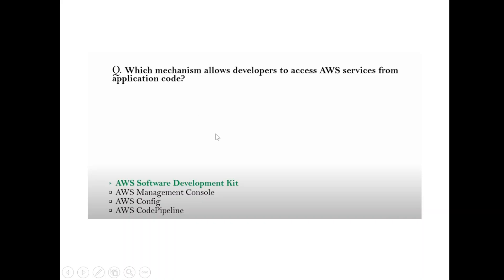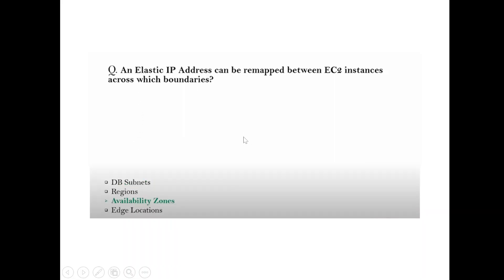Question: Which mechanism allows developers to access AWS services from application code? Answer: Software Development Kit (SDK). Question: An Elastic IP address can be remapped between EC2 instances across which boundaries? Answer: Availability Zones.